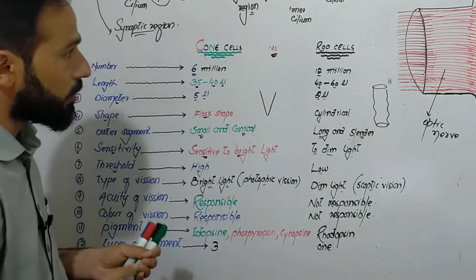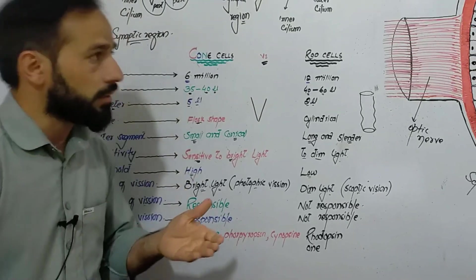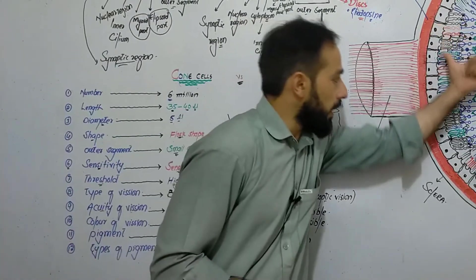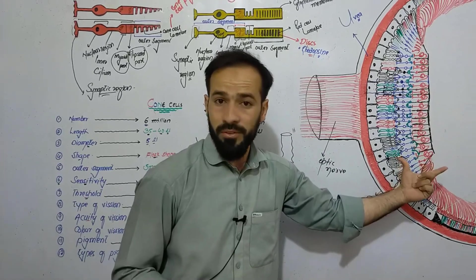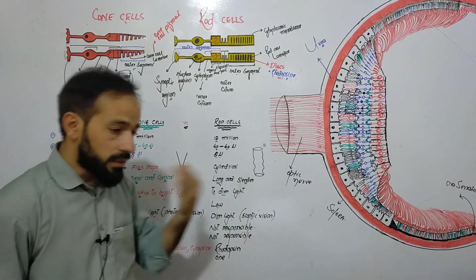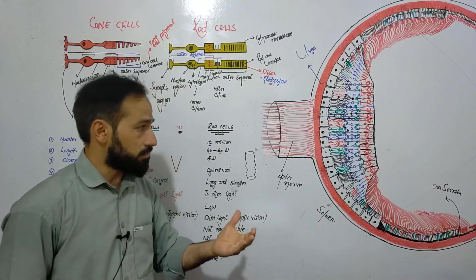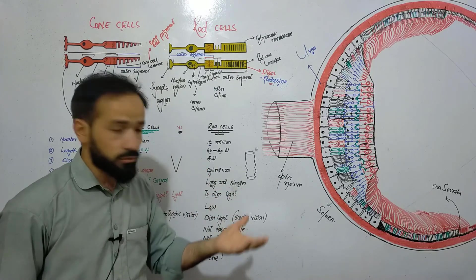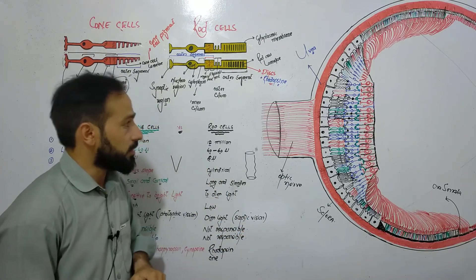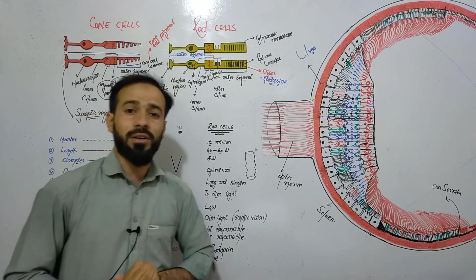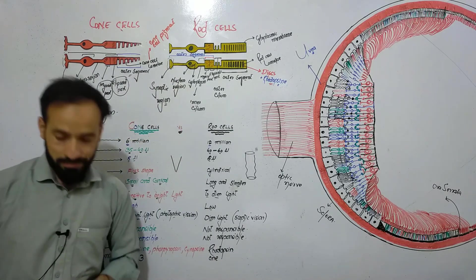So these are the 12 differences between rods and cones. I hope you liked the lecture. In the next lecture I will discuss the layers of cells and the types of cells present in the retina. See you guys in the next lecture — till then, Allah Hafiz.